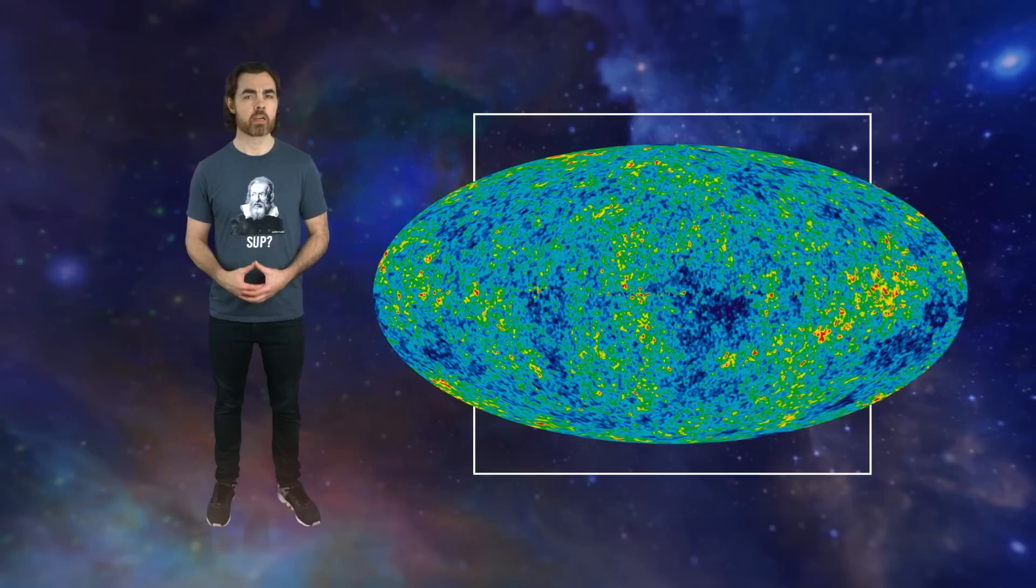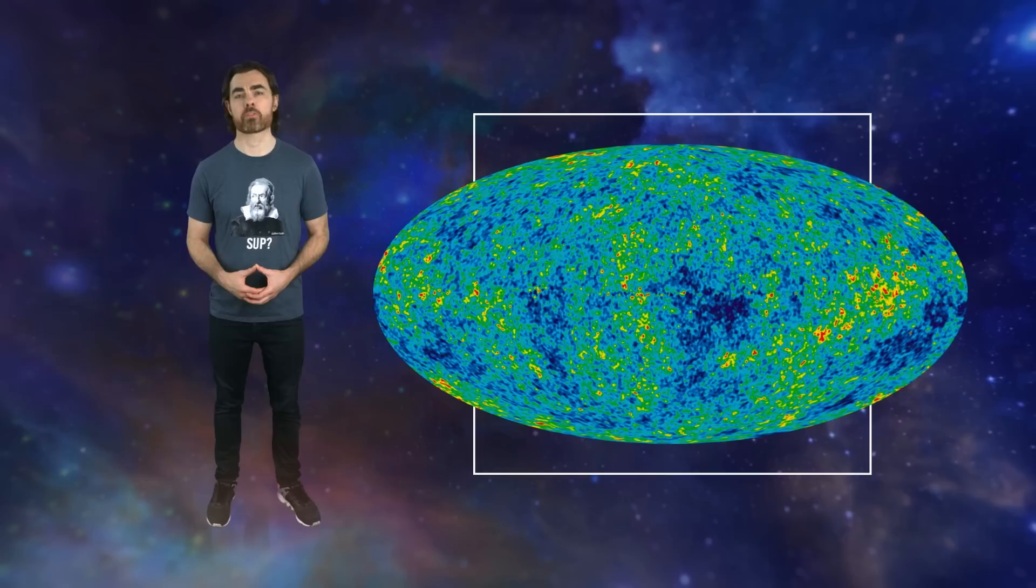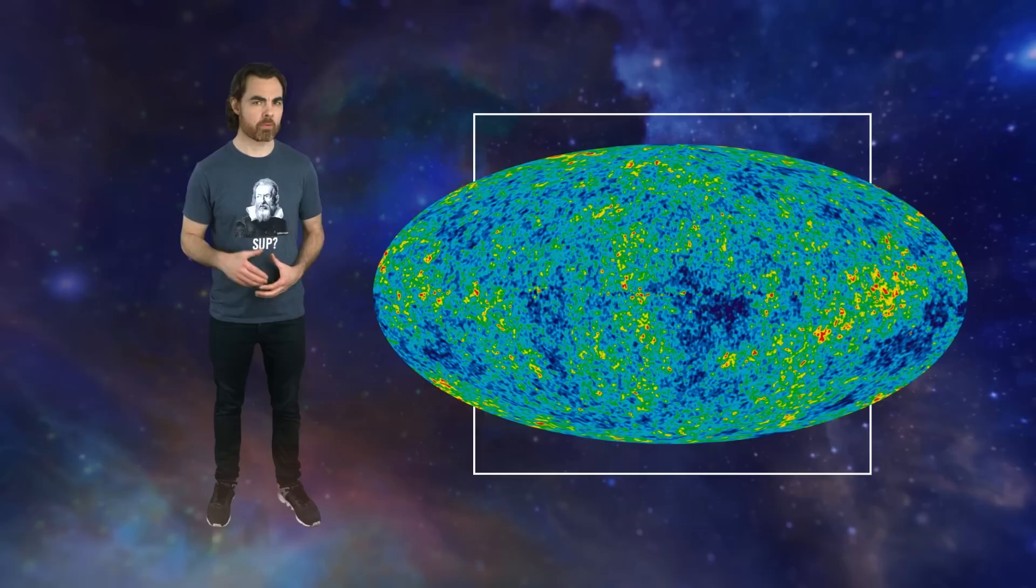This is the map of the CMB across the entire sky, created by the Planck satellite. The speckles are tiny differences in temperature, corresponding to tiny differences in density. The blue regions are a factor of 1 in 100,000 cooler than the red regions, and also slightly more dense.